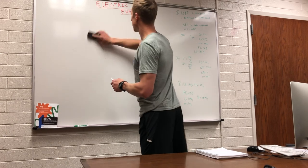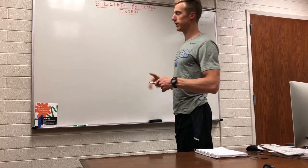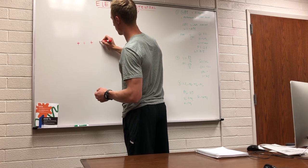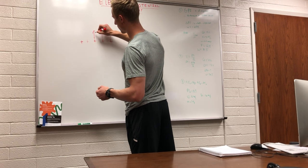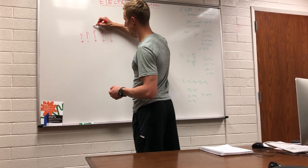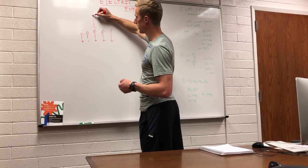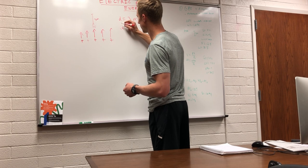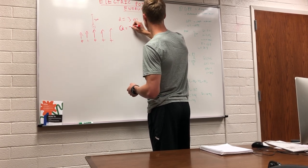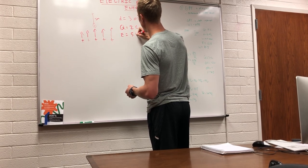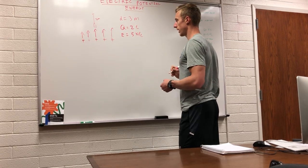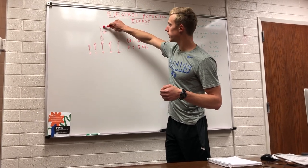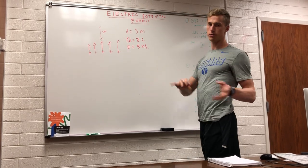We're going to do a problem, so I'll write it out and then you try to pause the video and do it yourself. We have a positive electric field going up the whiteboard, and a positive charge that the electric field is going to move a distance of three meters. Our charge q is equal to two coulombs and our electric field is equal to five newtons per coulomb. What we want to know is how much work is done by the electric field moving this charge from here to here.